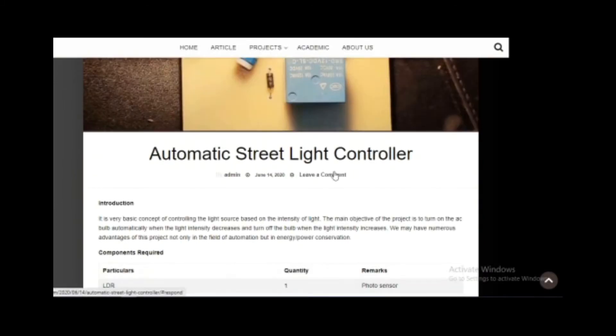The basic idea of this project is to control a light source based upon the intensity of light. The main objectives of this project is to turn on the AC bulb automatically during the night and to turn it off during the day. We can see many manually controlled street lights all over the country. If we can replace such manually controlled street lights with automatic street lights, then we can save many watts of power.